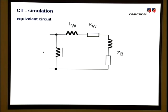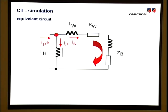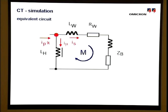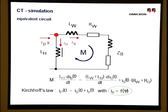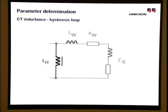According to Kirchhoff's law, at the red node, the secondary current is merely the image of the primary current, distorted by the magnetizing current. The secondary current is of special interest because it flows through the relay, and it can be calculated via the mesh M and Kirchhoff's law. Special attention has to be paid to the magnetizing inductance, which is a non-linear element due to the magnetic behavior of the iron core, known as the hysteresis loop.